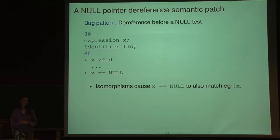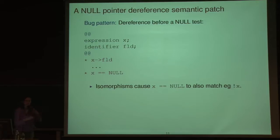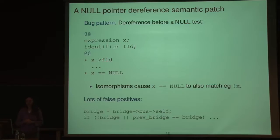To specify finding these kinds of bugs in our notation, we have the basic idea that you have a dereference and then you have a null test. We write a pattern where X is an arbitrary expression and 'field' is an arbitrary field name. This code should appear at some point, and then somewhere later in the code the null test should appear. The dot-dot-dot notation means some unknown code occurs in between the two, and there is an execution path that gets you from one to the other — so it's not just a syntactic notation. The little stars mean I don't have any particular transformation to perform; I just want to be informed about the presence of these things. Applying this to the entire Linux kernel, we get around 300 reports.